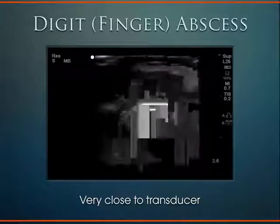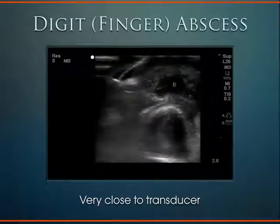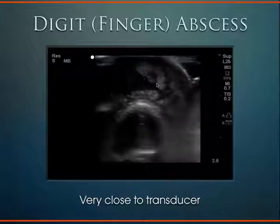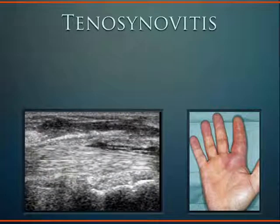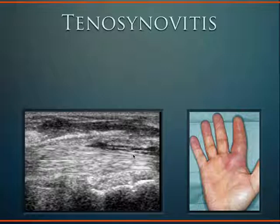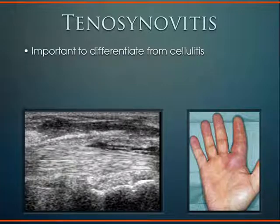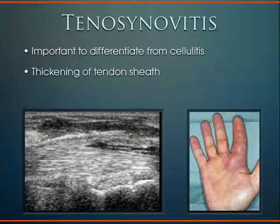Here's a finger abscess — superior to the bone we can see all this abscess material beneath the skin but above the bone. This patient had a very large finger abscess that was drained successfully. You can also see tenosynovitis — an infection of the tendon sheath. Patients have a swollen digit with a lot of tenderness to palpation, and ranging the finger moves the tendon through the infected tendon sheath causing significant pain. It's often a clinical diagnosis but ultrasound helps differentiate tenosynovitis from simple cellulitis — you see thickening of the tendon sheath and often an effusion.